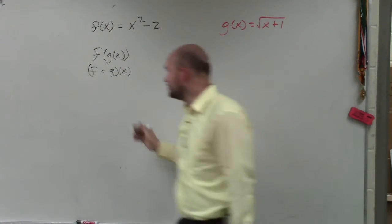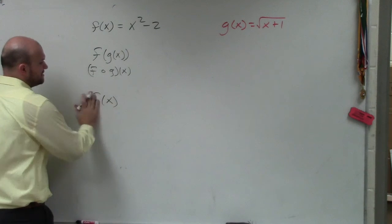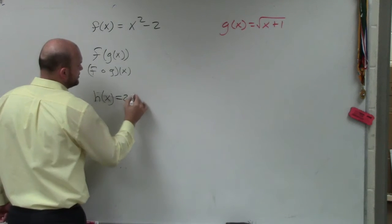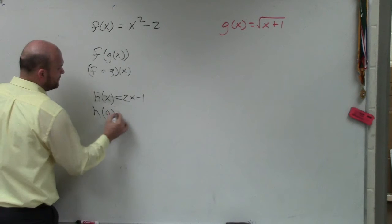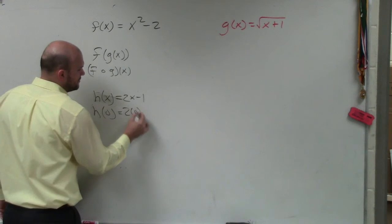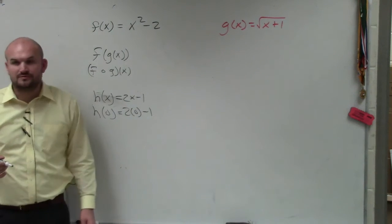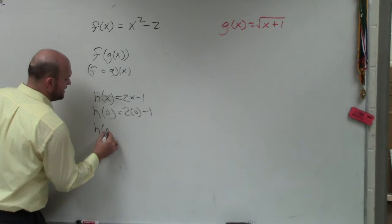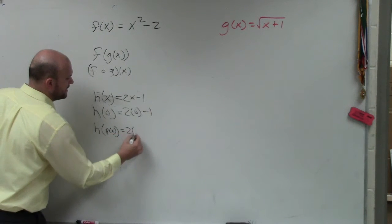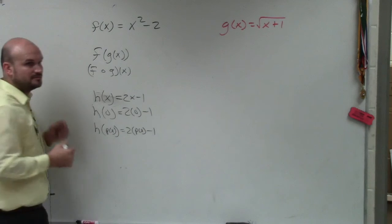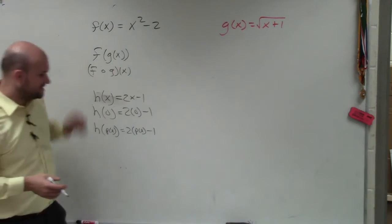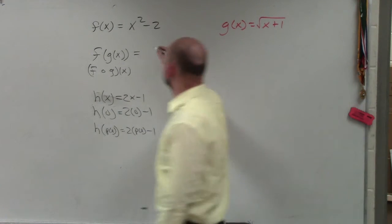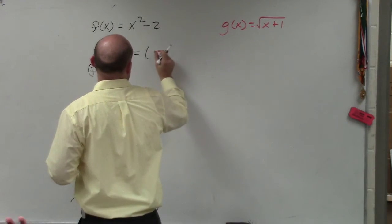I'm going to do a random example here again just to remind you guys. Let's actually use h of x. Let's pretend h of x was 2x minus 1. If I did h of 0, then you'd plug in 0 for x. Everybody is okay with evaluating functions like that, right? So if I said what's h of p of x, then you're just going to plug in what p of x is in for x.